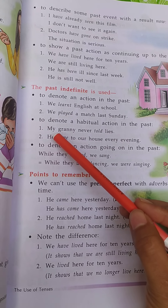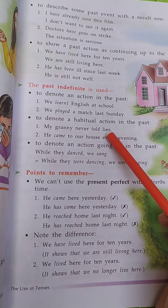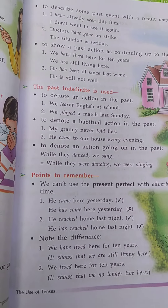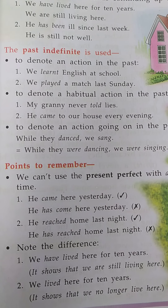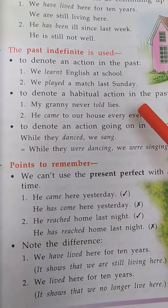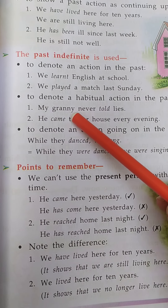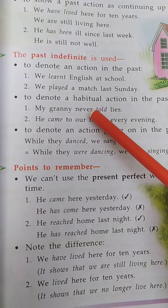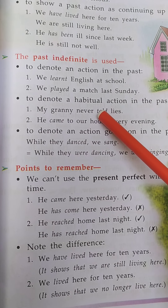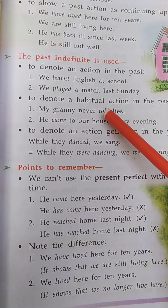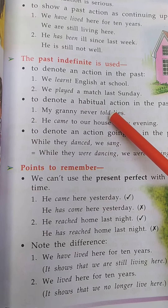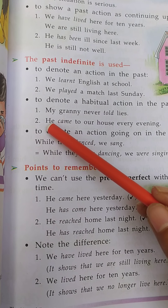Example number one: my granny never told lies. Means मेरा जो granny, उन्होंने कभी झूठ नहीं बोलते थे। इधर जो verb है, told — ये tell verb का V2 form है — तो ये sentence past indefinite tense में दिया गया है।